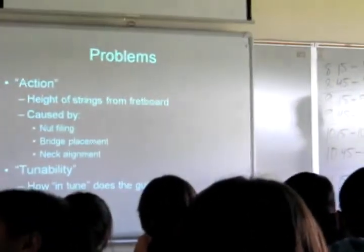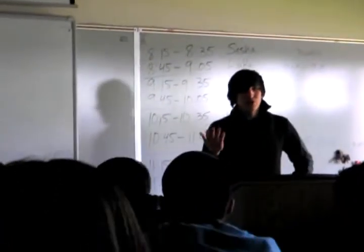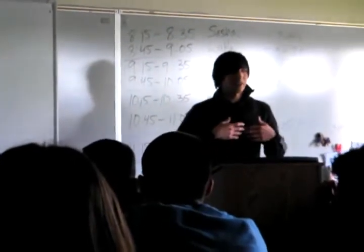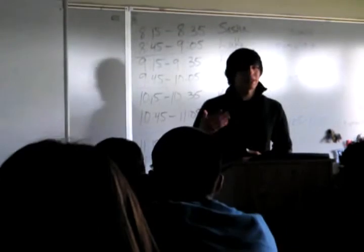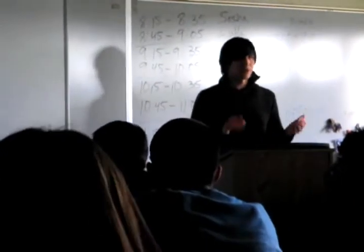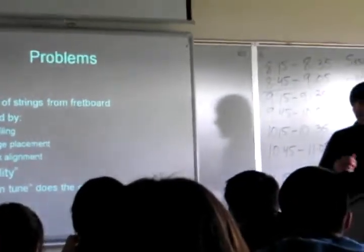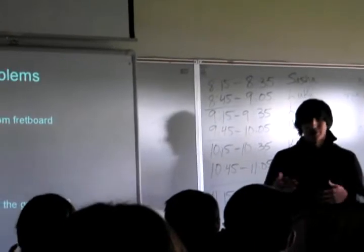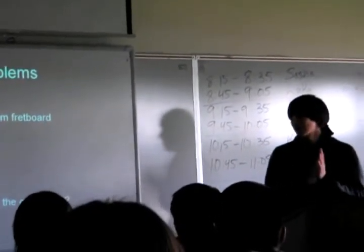So we'll call these challenges rather than problems. As I was going through my project, there were a couple things that I encountered after I actually completed things that were slight alterations, things that I hadn't planned on happening. The action of the guitar actually refers to the height of the strings off the fretboard. That can be caused by how deep I filed the string slots in the nut, or the bridge placement, or the way the neck's aligned if it's misaligned. The neck alignment turned out really well. I'm very pleased with that.